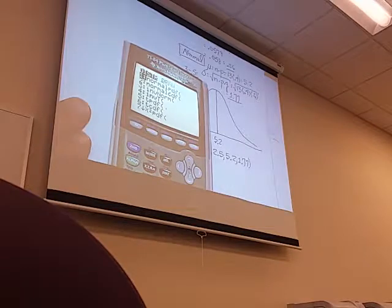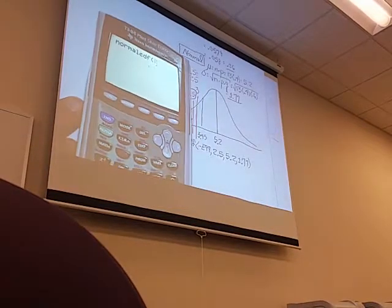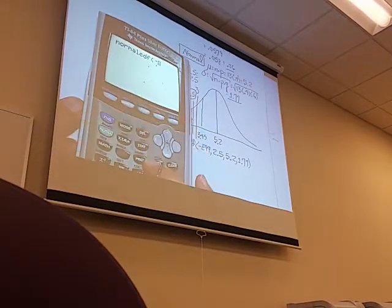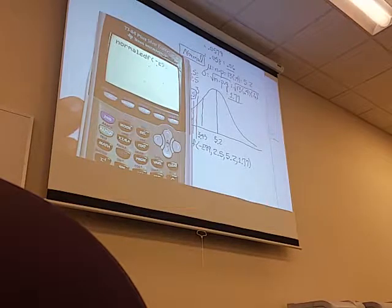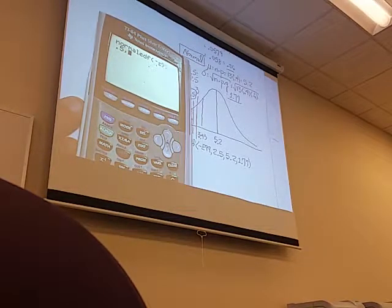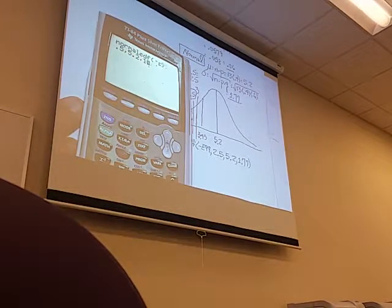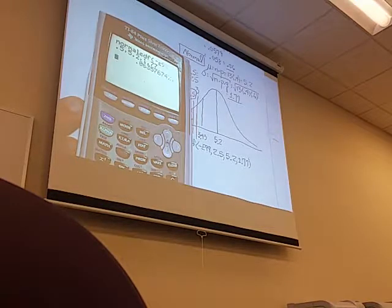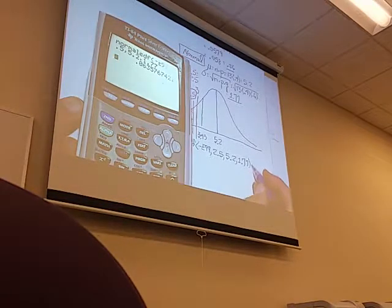We're going to go from negative infinity, which is the left bound, 2.5 is the right bound, 5.2 is the mean, and 1.77 is the standard deviation. So let's put that in the calculator. Second vars number 2, negative E99, 2.5, 5.2, 1.77.